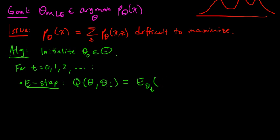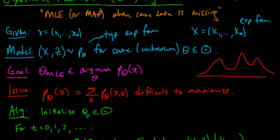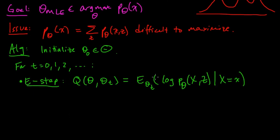So, this function q of theta and theta_t is the expected value under the parameter theta_t of the log of the probability under the parameter theta of the joint distribution x and z, given that x equals the observed value little x. So x was our observed. This was our observation. So this is the conditional expectation of the log of the joint distribution under theta. Okay, that's the E step.